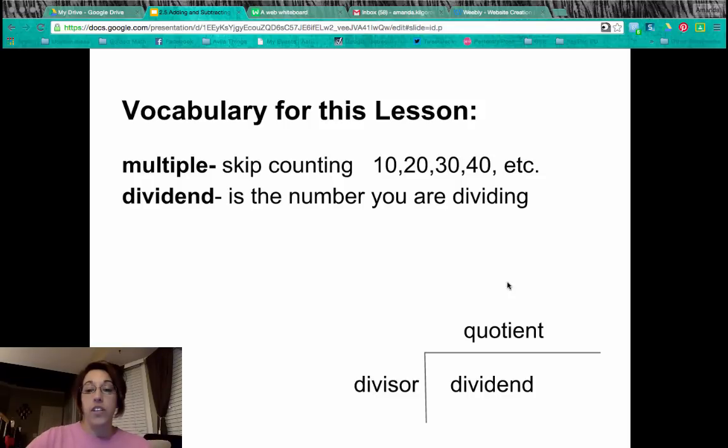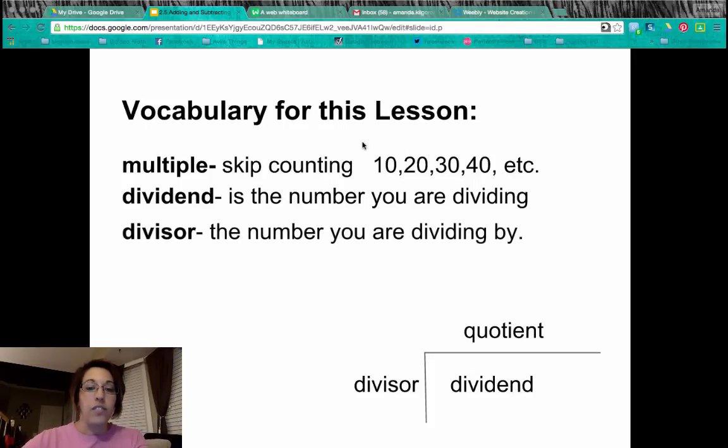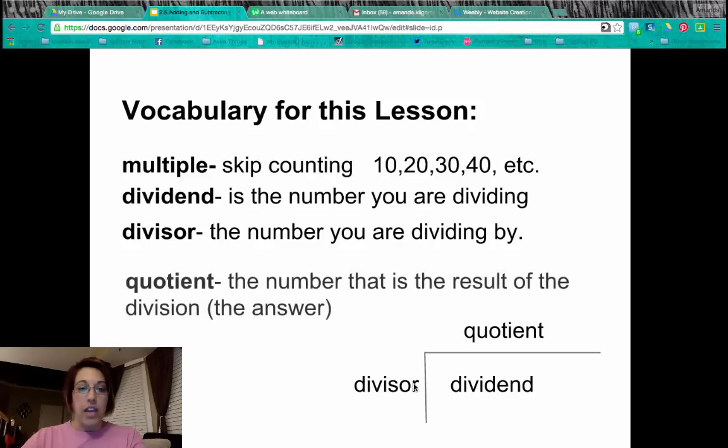We have our dividend, that's the number down here that you are dividing. Our divisor, the number you're dividing by, and our quotient, which is the answer or results of the division.